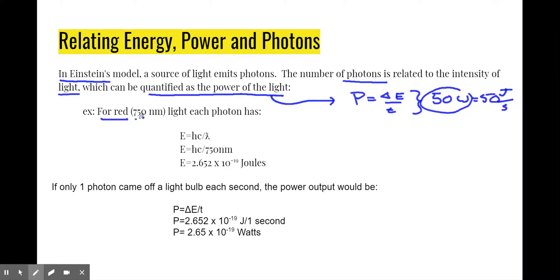For red light that has a wavelength of 715 nanometer, each photon has a certain amount of energy related to the wavelength. It's hc over lambda. So, hc over 750 nanometers turns out to be 2.652 times 10 to the minus 19 joules. That is a single photon of red light with that wavelength.